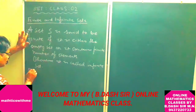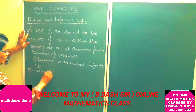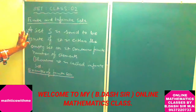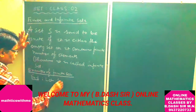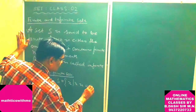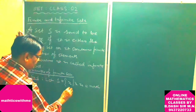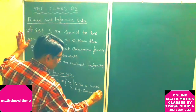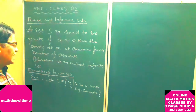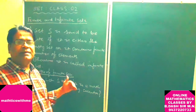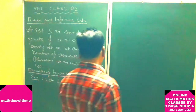Now, examples of finite sets. Example 1: Let S = {x | x is a month in the English calendar}. Here, x is a month in the English calendar means we have the elements January, February, March up to December. So there are 12 elements in this set.